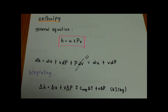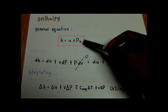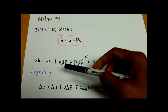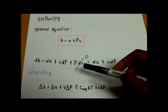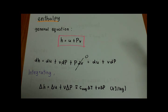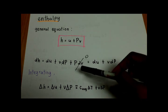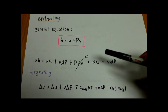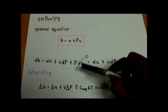Next, it's about enthalpy. Enthalpy is the total heat content of a system and it is equal to the internal energy of a system plus the multiplication of pressure and volume. This is the general formula for enthalpy. When we take the derivative of this equation, we get dh equal to du plus v dP plus P dv. In incompressible substances, v is always constant, so when we take the derivative of a constant the result is zero. Hence, P dv is zero.